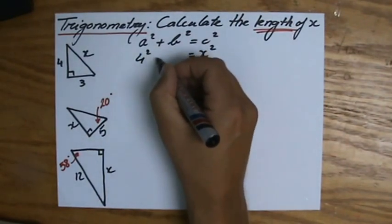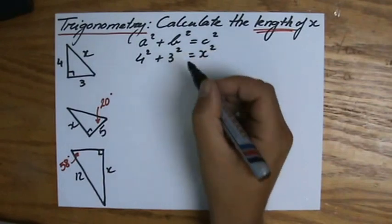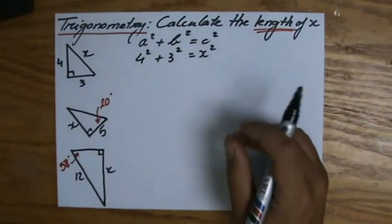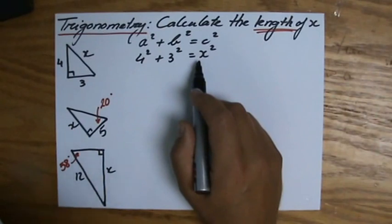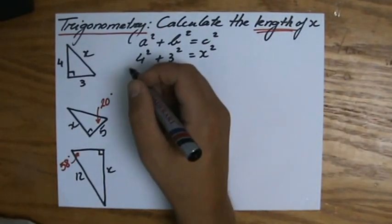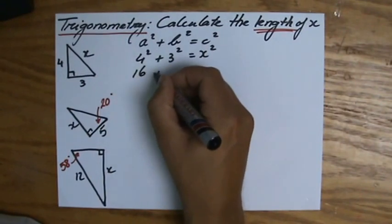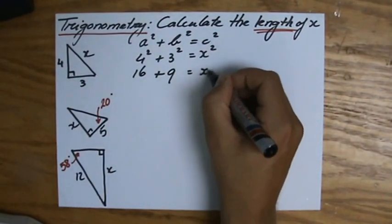And then I can fill in a and b. It doesn't really matter if I say 4 squared plus 3 squared or 3 squared plus 4 squared, as long as you take a moment to make sure you have the hypotenuse correct. We can work it out: 16, 3 times 3 is 9, and that equals x squared.